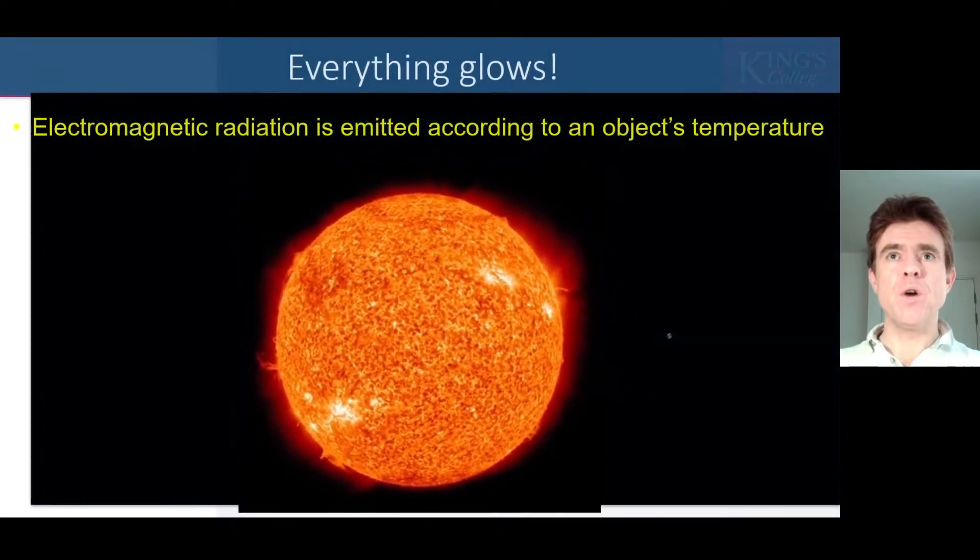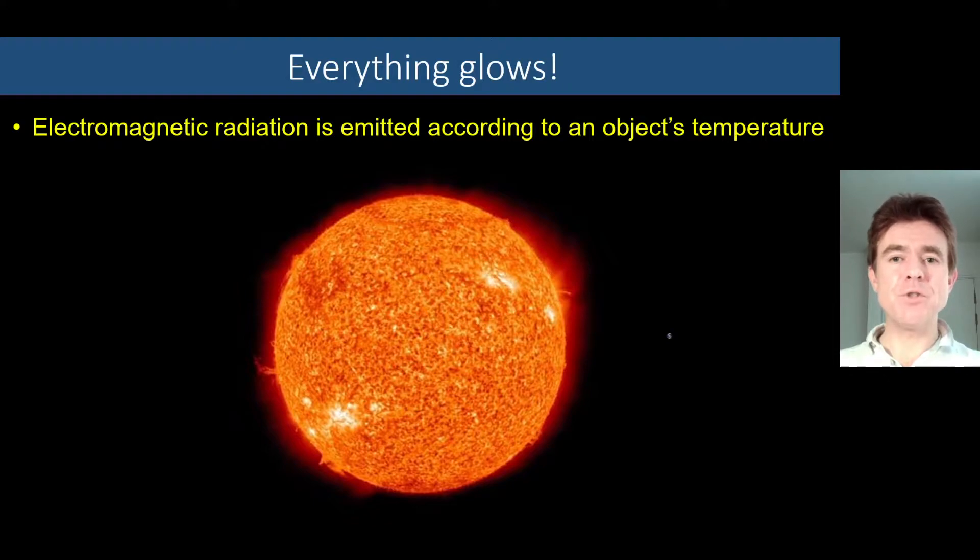First of all, we need to consider the fact that every single object around us is in fact glowing with emission of electromagnetic radiation in accordance with how hot that object is. So looking at the sun here, its surface temperature is at about 6,000 degrees centigrade and as a result it has a whole broad spectrum of electromagnetic radiation being emitted.